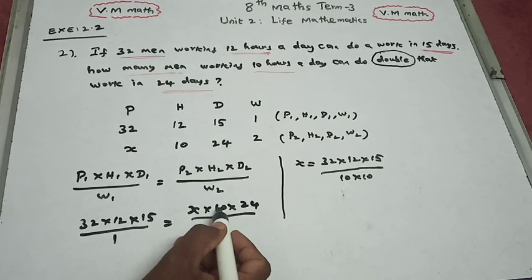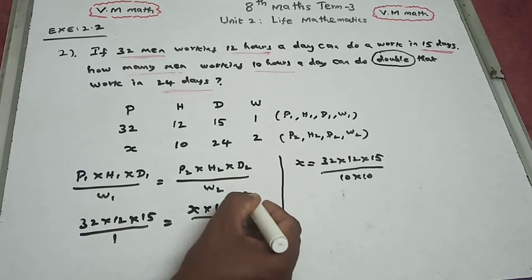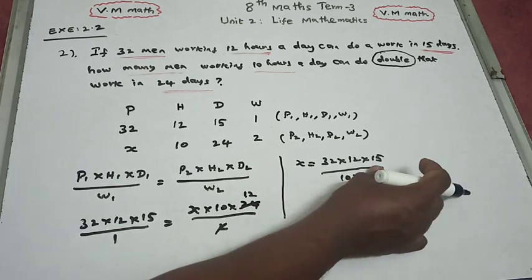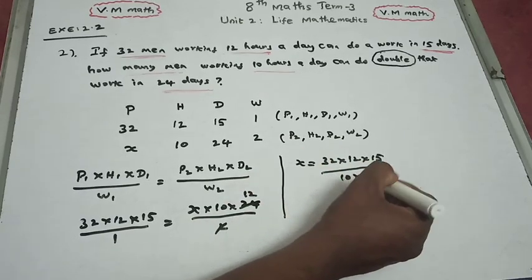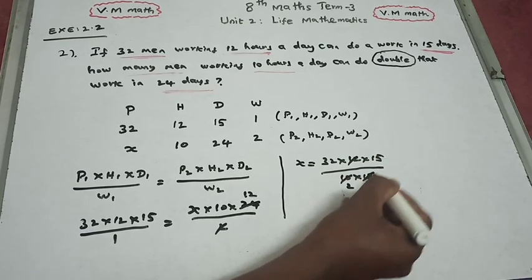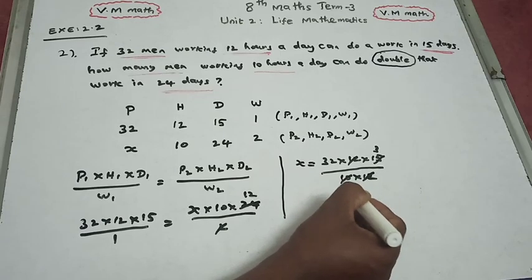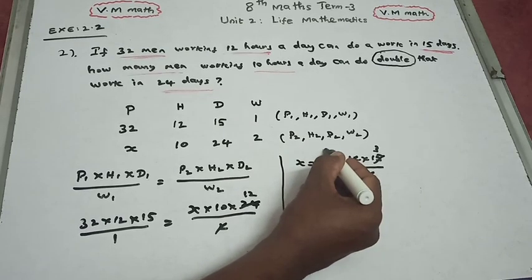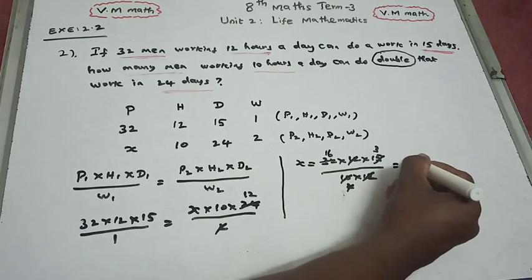So x into 10 into 24 divided by 2. Cancel: 12 will be cancelled, 2 times 5, 3 times 1, 16 times remaining. 16 into 3 is 48.